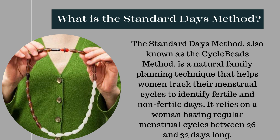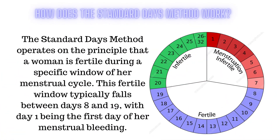What is the standard days method? The standard days method, also known as the cycle beads method, is a natural family planning technique that helps women track their menstrual cycles to identify fertile and non-fertile days. It relies on a woman having regular menstrual cycles between 26 and 32 days long. The key tool used is a set of beads called cycle beads, which act as a visual aid to track the menstrual cycle.